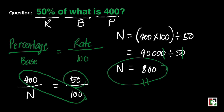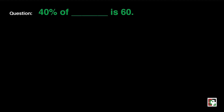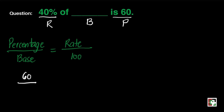Next question: 40% of blank is 60. 40% is our rate, we are looking for the base, and 60 is our percentage. We'll be using the same formula: percentage over base is equal to rate over 100. Now let's substitute: 60 over N is equal to 40 over 100.